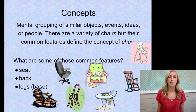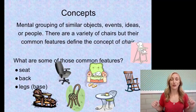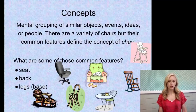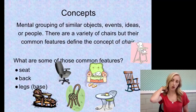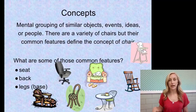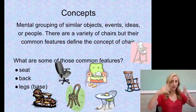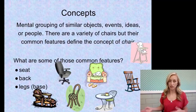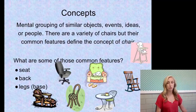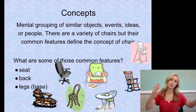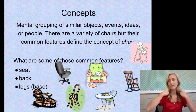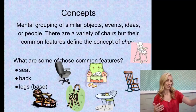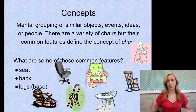Concepts is the big overarching term we have to start with. Concepts are mental groupings of similar objects, events, ideas, or people. For example, there are a variety of chairs, but their common features define the concept of chair. It's like a category in your brain that organizes things. Common features include a seat, a back, legs or a base — some on wheels, some that rock, some that recline. But you know a chair when you see it, even a new kind, because it's a concept.